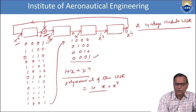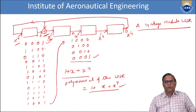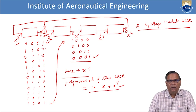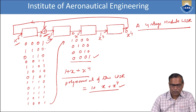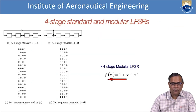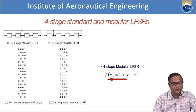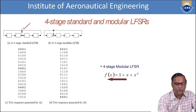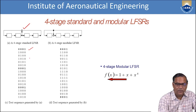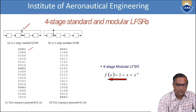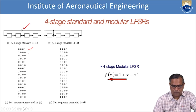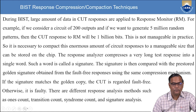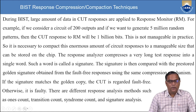You can also have another type of LFSR where the feedback path is placed differently. When you start with 0001 in this configuration, you get a different sequence of patterns — for example, 1 followed by three zeros, and so on, generating a distinct set of pseudo-random patterns.